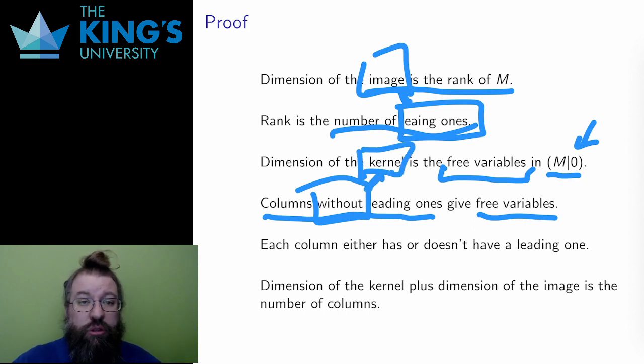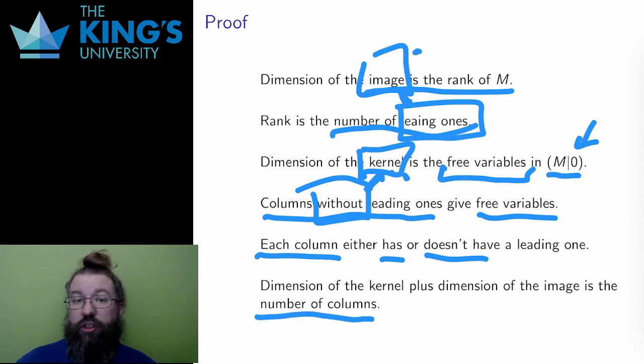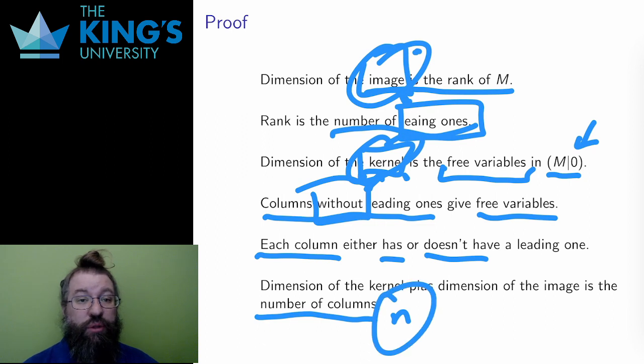Well, in the reduced form of the matrix M, each column either has a leading one or it doesn't. The leading ones give the dimension of the image. The columns without leading ones give the dimension of the kernel. They add up to the number of columns. This is an m by n matrix, which means it is a matrix with n columns. Therefore, the dimensions add up to n, which is the dimension of the domain. And the result is proved.